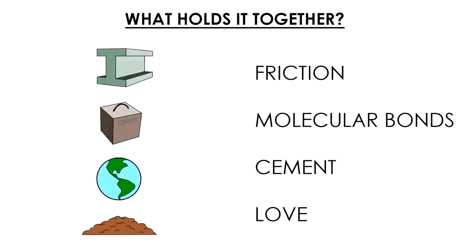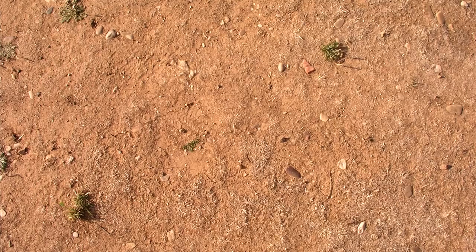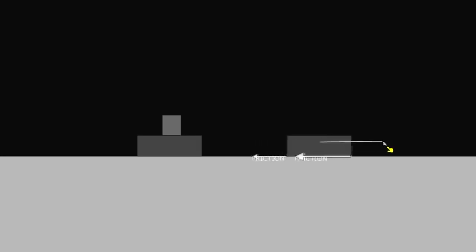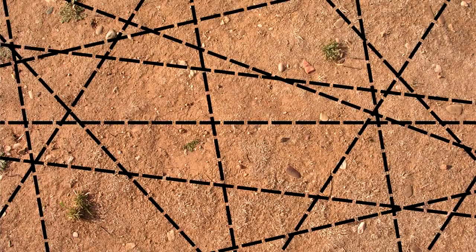Soils are frictional materials. Rather than being held together by molecular bonding like steel, or by a binder like cement and concrete, their strength almost completely depends on internal friction between the soil particles themselves. If we want to avoid sliding, the frictional force can be considered the shear strength — the more friction, the more strength against shearing. Just like the simple block on a plane, the shear strength of soil depends on the internal forces too. But unlike that example, soils have an infinite number of potential sliding planes all at once.